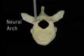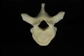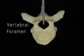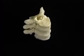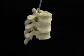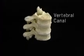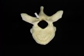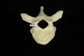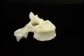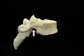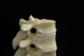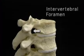This arch of bone, the neural arch, encloses the spinal cord. The space surrounded by the arch and the back of the body is called the vertebral foramen. The series of vertebral foramina create the tubular space that contains the spinal cord — the vertebral canal. This part of the neural arch is called the lamina; this part is the pedicle. There's a small notch in the upper edge of the pedicle and a larger notch in the lower edge. Together, the notches above and below form an opening on each side — the intervertebral foramen.